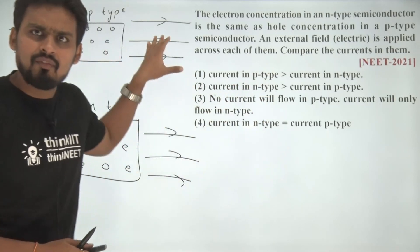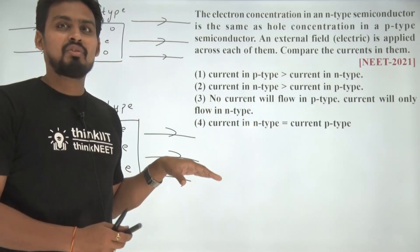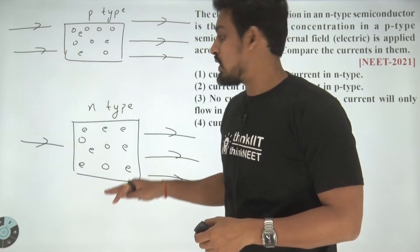So in which of these two cases more current would be generated? More current would be generated where the electrons are free. That means, in the case of N type.